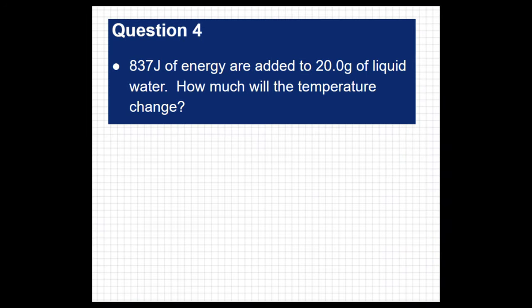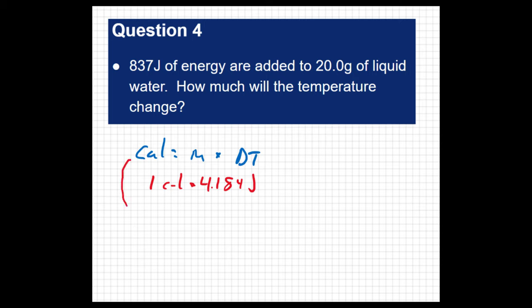When we did this calculation with the number of calories, we saw that the calories would equal the mass times the change in temperature. So the number of calories with a small c would equal your mass of water in grams times the change in temperature in degrees Celsius. In the last problem, we did this with joules, and what we saw was that 1 calorie equals 4.184 joules. So to convert from joules to calories, you would just have to multiply by 4.184. So if I were to take this equation and just solve for joules, what I would do is 4.184 times the mass times the change in temperature.